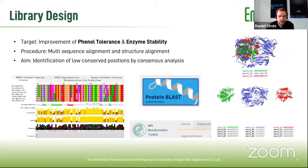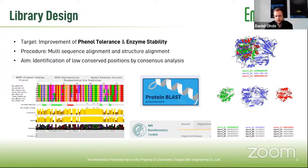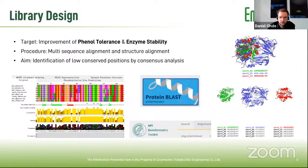We wanted to improve the phenol tolerance and overall enzyme stability. What we do is a multi-sequence alignment and structure alignment to find hotspots where certain regions of the enzyme are very flexible. These we then target for enzyme engineering. One can identify highly conserved and not conserved positions using open-source tools such as normal protein BLAST tools, the tools from MPI Bioinformatics — for example, the alignment viewer.